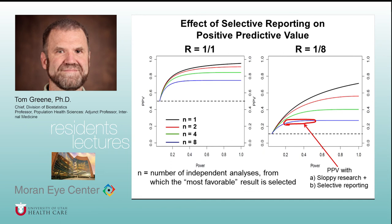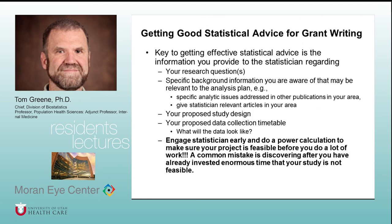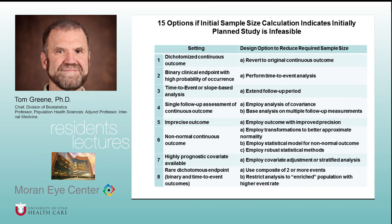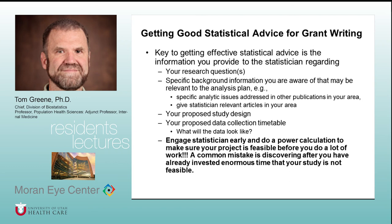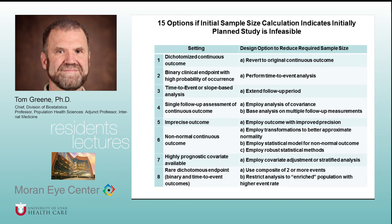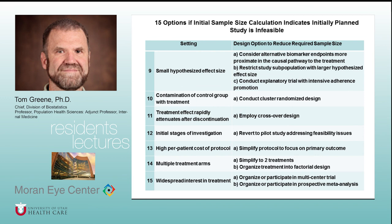This is why we harp on pre-specifying analyses. For those writing grants — which is a later stage for most of you — the same ideas apply. If the feasible sample size isn't large enough, there are many statistical strategies we can explore to help you design a well-powered study. I'll skip over those slides, but you'll have access to them.